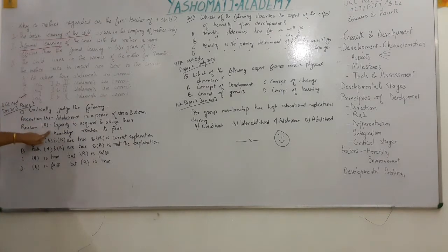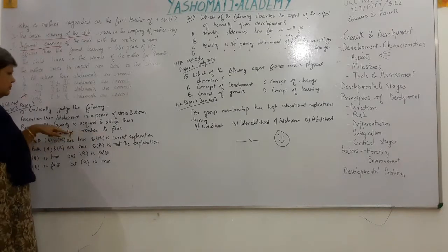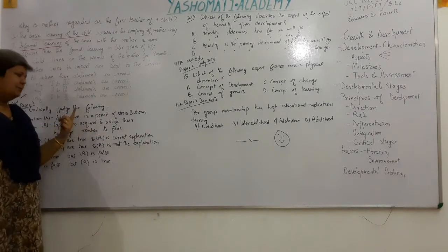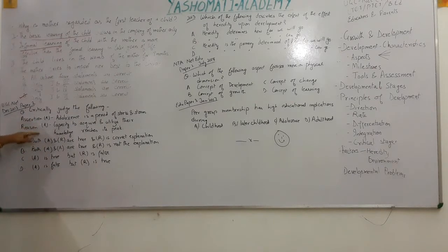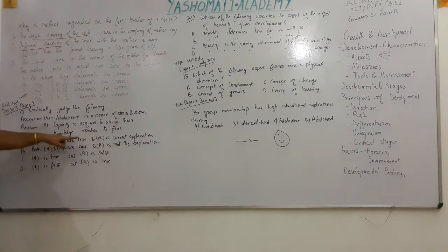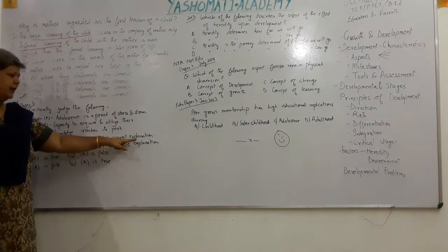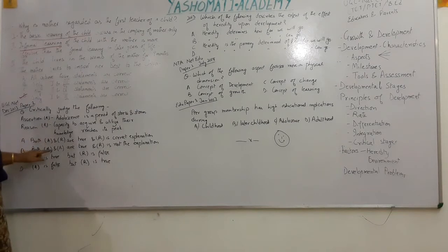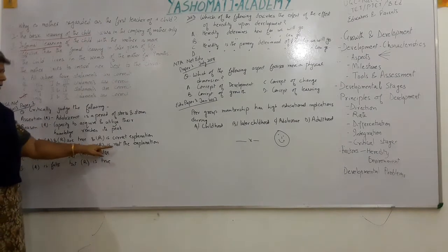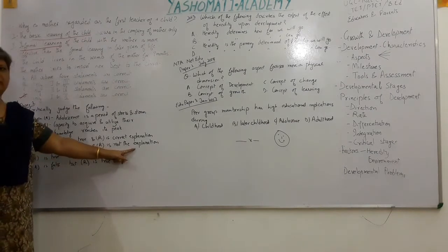Both statements are true. In adolescence, knowledge-gathering capability is indeed at its maximum. But we have to judge whether R is the correct explanation of A — does stress occur because knowledge capacity peaks? Option: Both A and R are true and R is the correct explanation. Option: Both A and R are true but R is not the correct explanation.